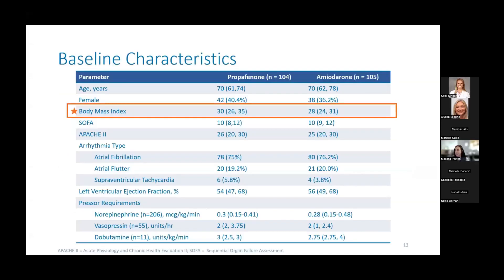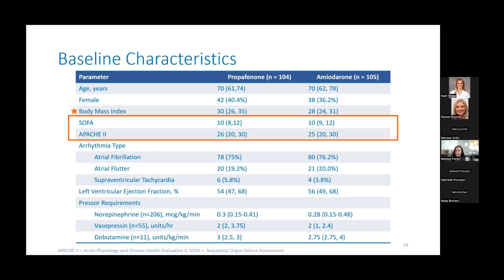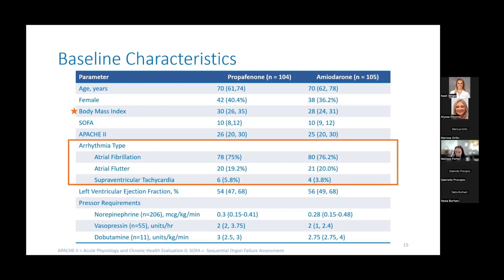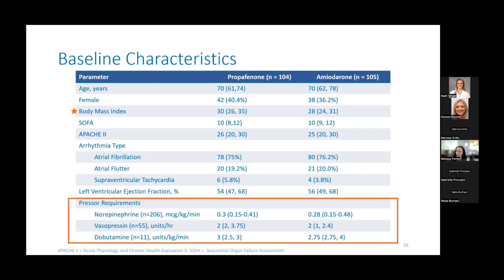Moving on to the results: the majority of patients had a median age of 70 years and were male. The only statistically significant difference in baseline characteristics between groups was BMI, which was greater in the propafenone group. Illness severity scores were similar between groups. In terms of arrhythmia types, the large majority presented in AFib, followed by atrial flutter, with a very small percentage presenting with supraventricular tachycardias. The large majority of patients were on norepinephrine with a median rate of approximately 0.3 in both groups, with some patients on vasopressin and 11 patients receiving dobutamine.